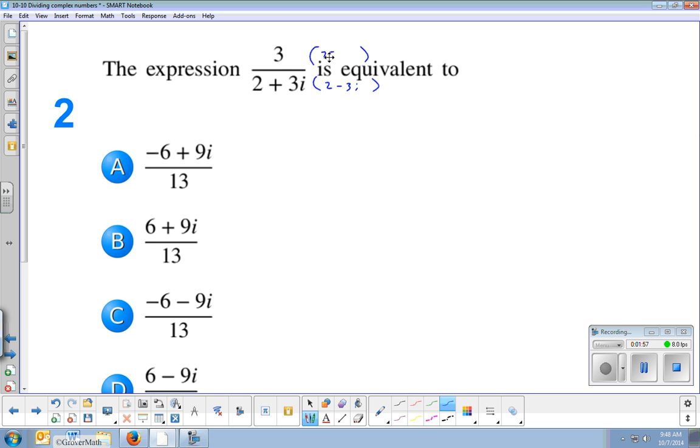So we'll multiply 2 minus 3i, top and bottom. Now the top is 3 times 2 minus 3i. That would be 6 minus 9i. Distribution, 2 times 3, 2 times negative 3i.